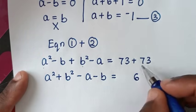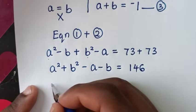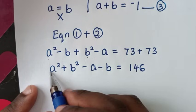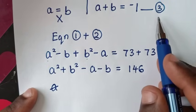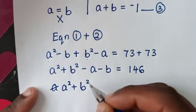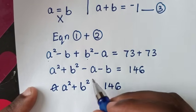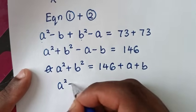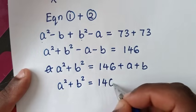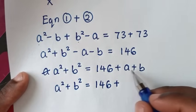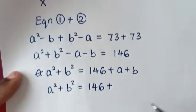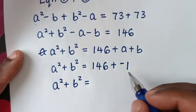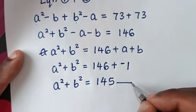So 73 plus 73 is 146. We'll be finding a squared plus b squared. The value of minus a minus b we can get from equation 3, so a squared plus b squared equals 146, and moving negative a, negative b to the other side gives plus a plus b. Since a plus b is from equation 3, which is negative 1, we substitute negative 1, giving a squared plus b squared equals 146 plus negative 1, which is 145. We'll call this equation 4.